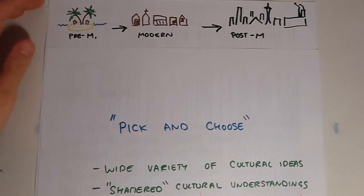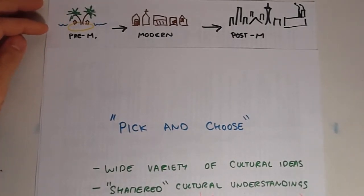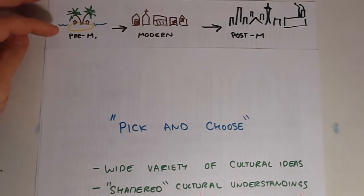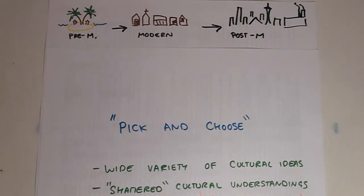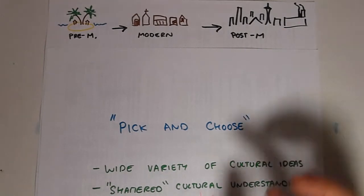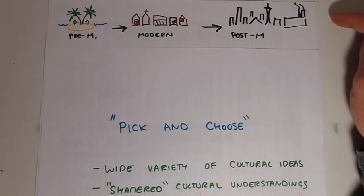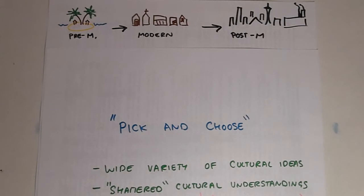If you remember in the pre-modern video, I used the example of people living on a tropical island as a kind of pre-modern society. In the modern society, I used a cowboy western town like you might see in a Hollywood movie. A postmodern society typically takes place in a very large urban environment — a city like New York or L.A. — where you have millions of people living together in one place.